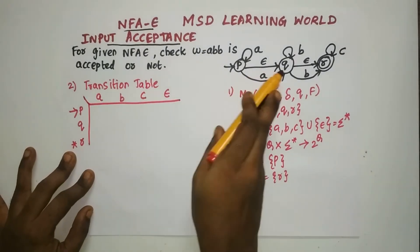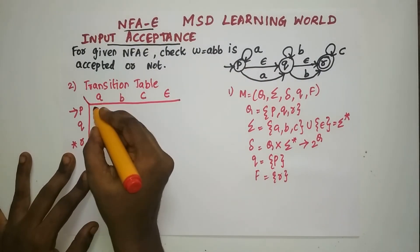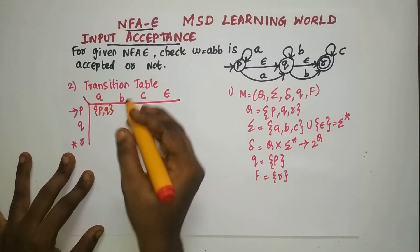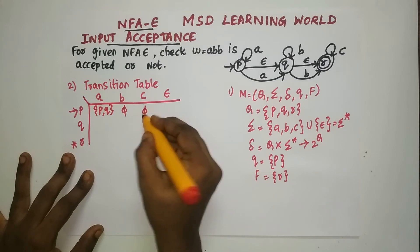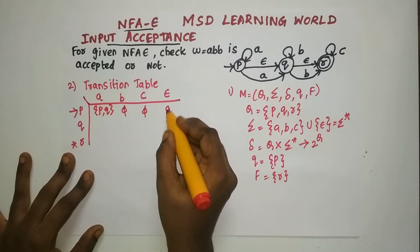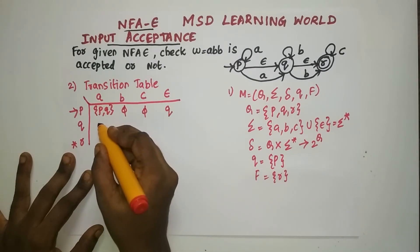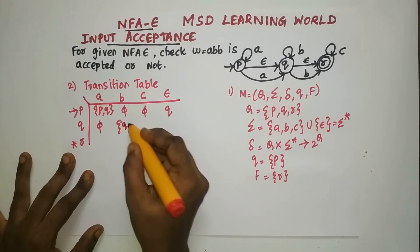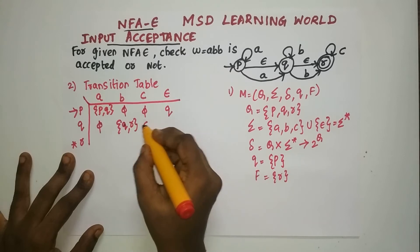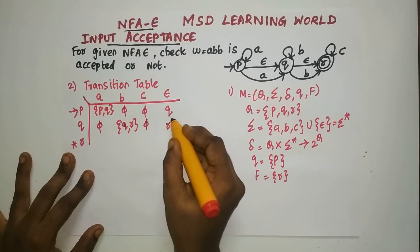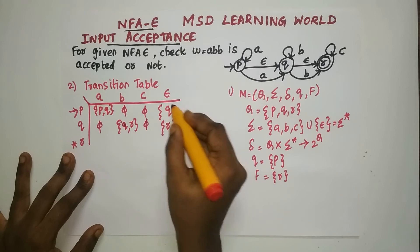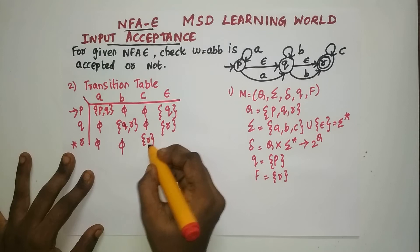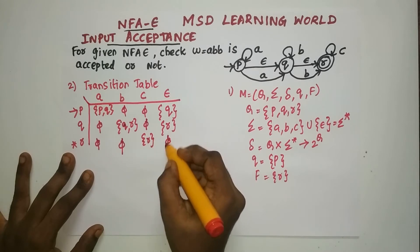P on A goes to P as well as Q. P on B is empty. P on C is empty. P on epsilon goes to Q. Q on A is empty. Q on B goes to Q as well as R. Q on C is empty. Q on epsilon goes to R. R on A is empty. R on B is empty. R on C goes to R. R on epsilon is empty.